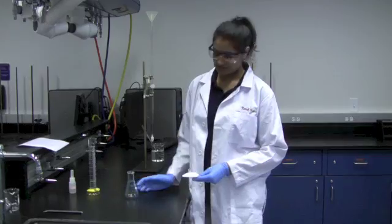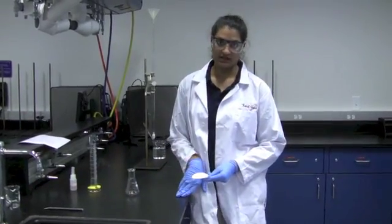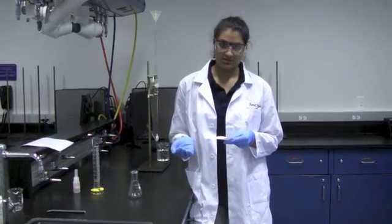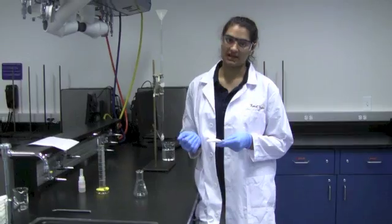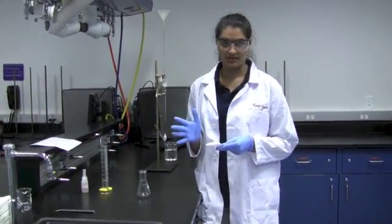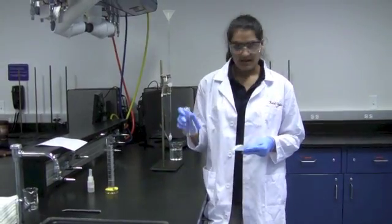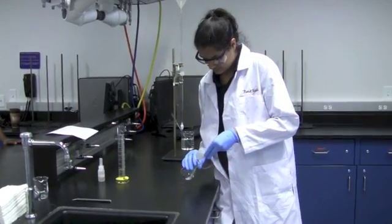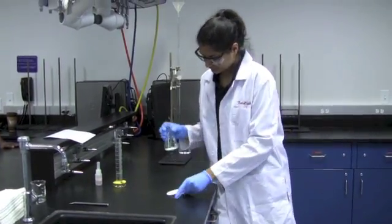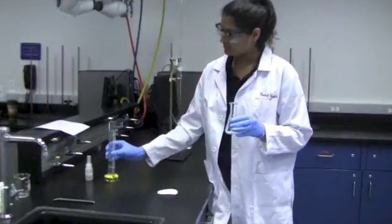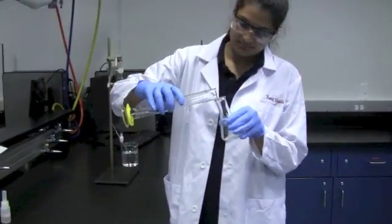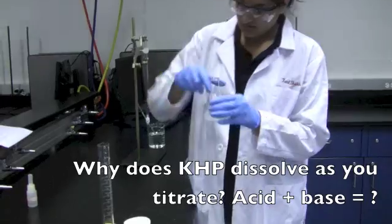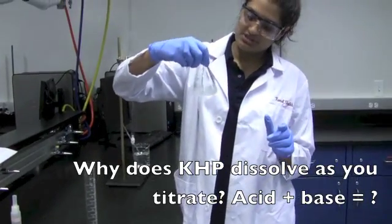Your next step is going to be to prepare the KHP solution. When you do this, you already calculated the amount of KHP that you will need before coming to class. So, weigh this on the balance and record it to four decimal places, and then add it to your Erlenmeyer flask. Once you do this, you're going to add 25 milliliters of water, and try dissolving the solution as much as you can.